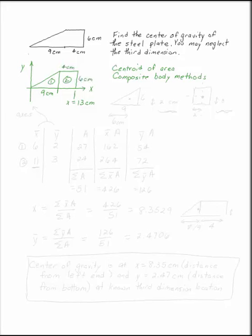So our triangle is 9 by 6. We know by the composite body methods that the centroid of a triangle is a third of the way from the big end in both of its directions. So this distance is two-thirds of 9, which is 6 cm, and this distance is one-third of 6, which is 2.